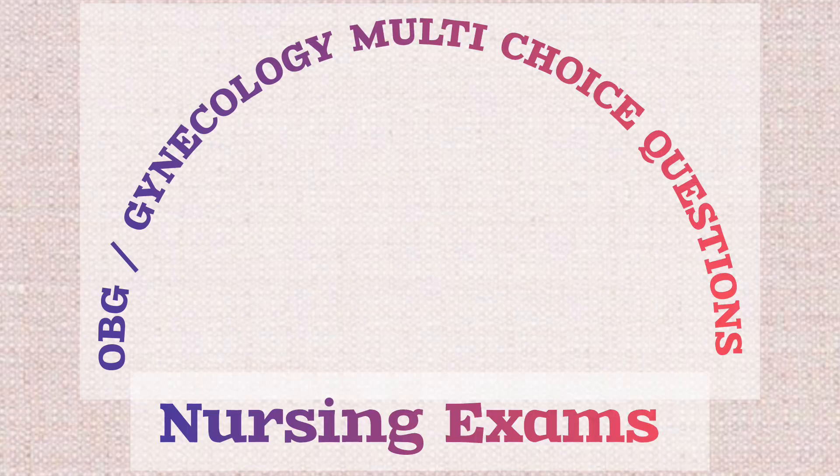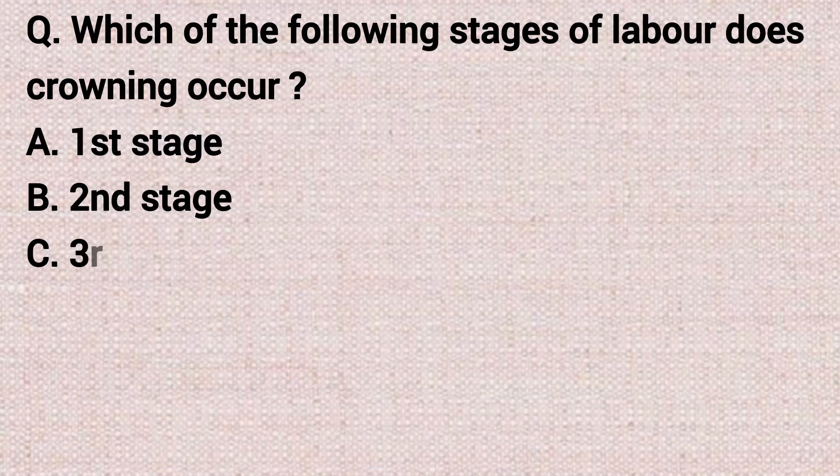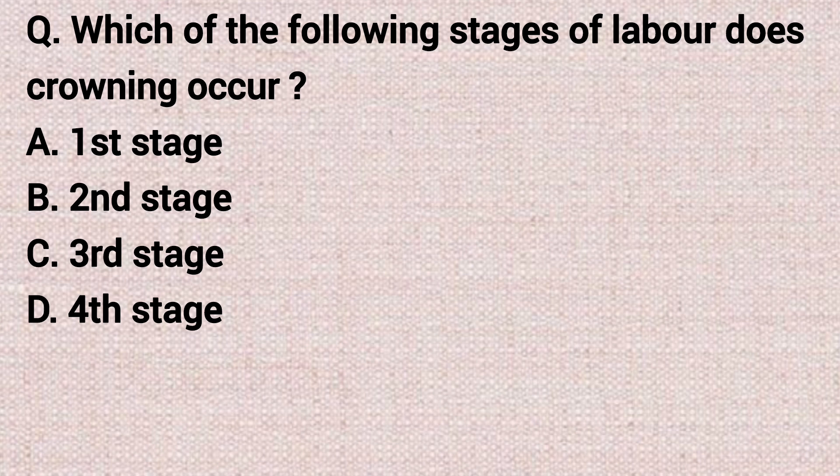Hi friends, welcome to SK Nursing Knowledge. Today we are discussing OBG multiple choice questions. The first question: which of the following stages of labor does crowning occur? Option A: first stage. Option B: second stage. Option C: third stage. Option D: fourth stage.